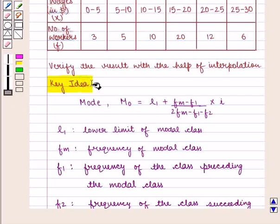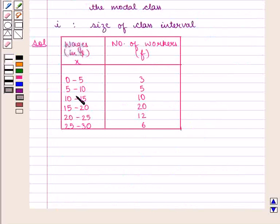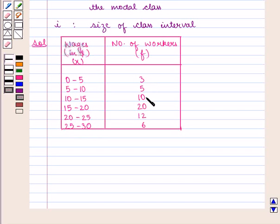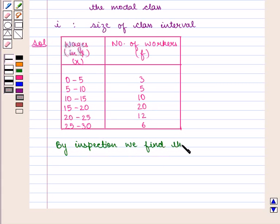With this key idea, we shall proceed with the solution. We are given the following distribution where wages in dollars are represented by X and F represents the number of workers, with wage ranges 0–5, 5–10, 10–15, 15–20, 20–25, and 25–30 having 3, 5, 10, 20, 12, and 6 workers respectively. By inspection, the modal class is 15 to 20, as it has the maximum frequency of 20.